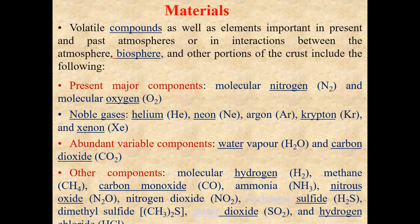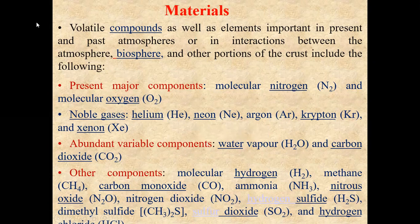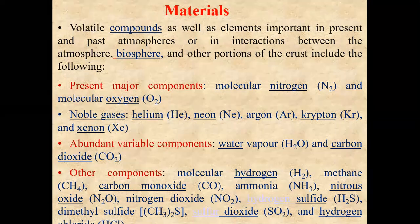The components include present major components, abundant variable components, and other components. Present major components include molecular nitrogen, molecular oxygen, CO2, NO2, argon, krypton, and xenon. Abundant variable components include water vapor and carbon dioxide. Other components include molecular hydrogen, methane, carbon monoxide, ammonia, nitrous oxide, nitrogen dioxide, hydrogen sulfide, dimethyl sulfide, sulfur dioxide, and hydrogen chloride.